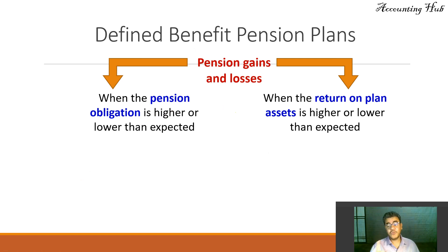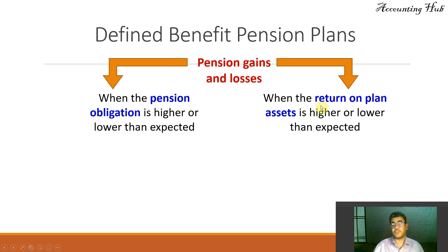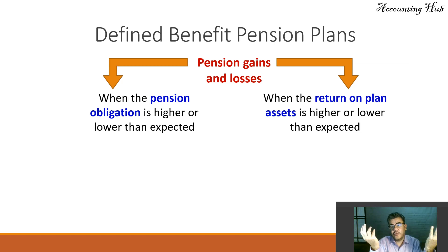We also have a different pension plan called Defined Contribution — we have a video about that in our video description. Here we have Pension Gains and Losses, because we have the Pension Obligation and we have the Return on Plan Assets. We compare Obligation and Plan Assets, and we can have a gain or a loss.